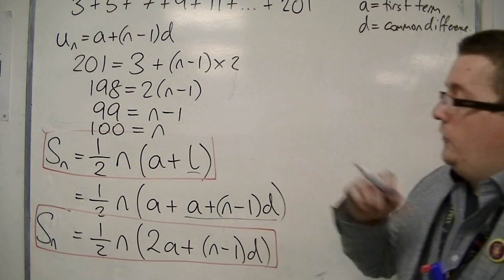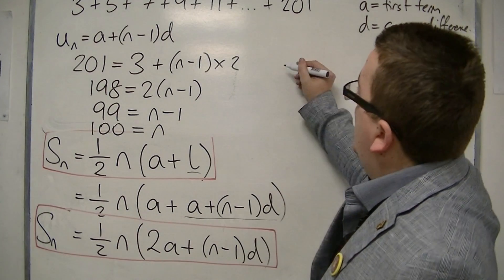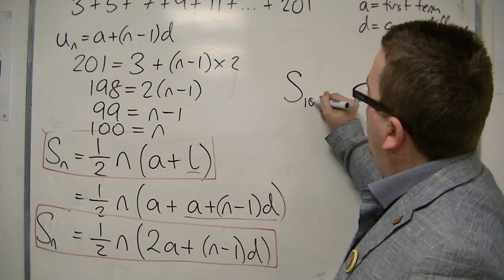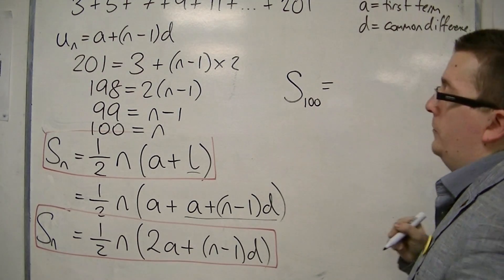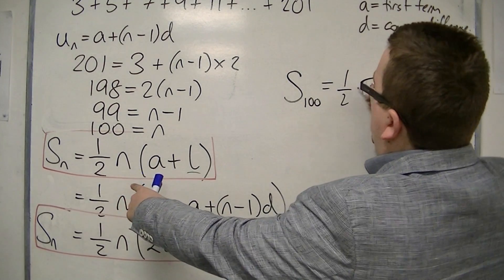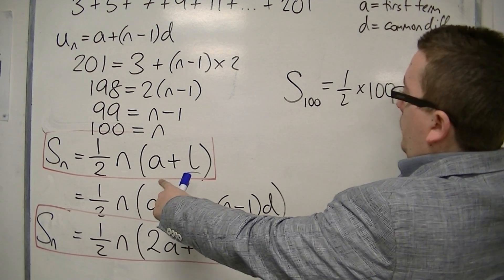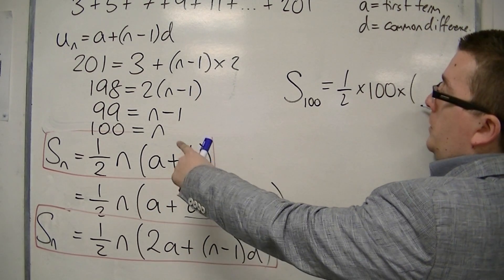Now, seeing as I have 100 terms, that's given me N. So I can now say the sum of the first 100 terms is 1 half times by 100 times by the first term, 3,